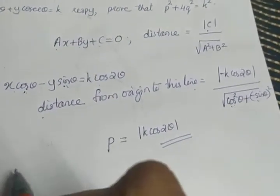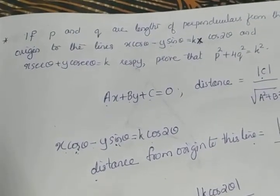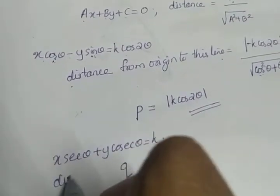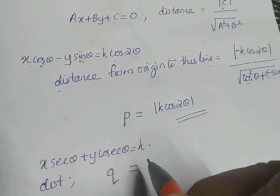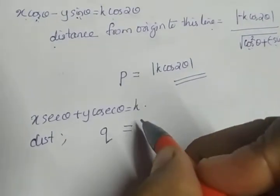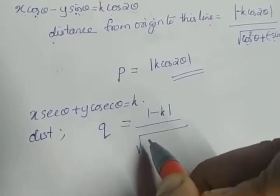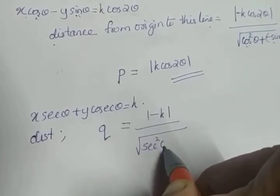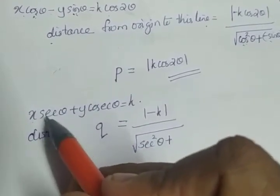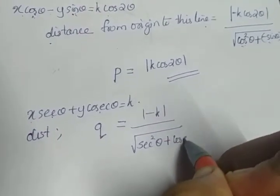Similarly, for the second line X secθ + Y cosecθ = K, the distance from the origin is given as Q. Applying the same formula |C|/√(A² + B²), the constant term C = -K, A = secθ, and B = cosecθ. So Q = |−K| / √(sec²θ + cosec²θ).